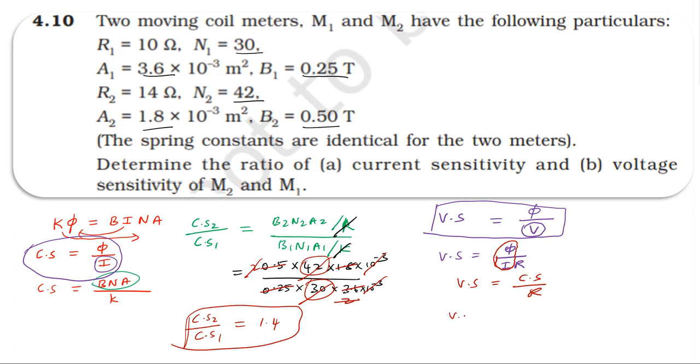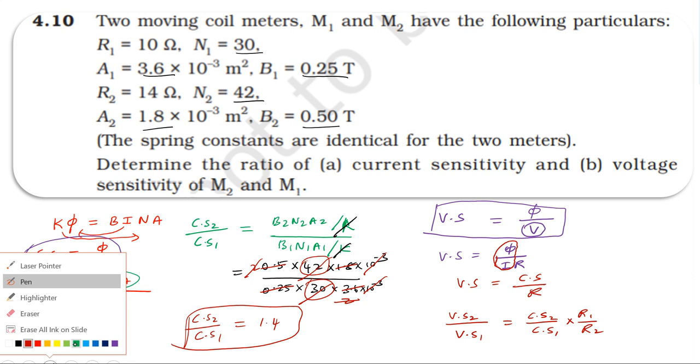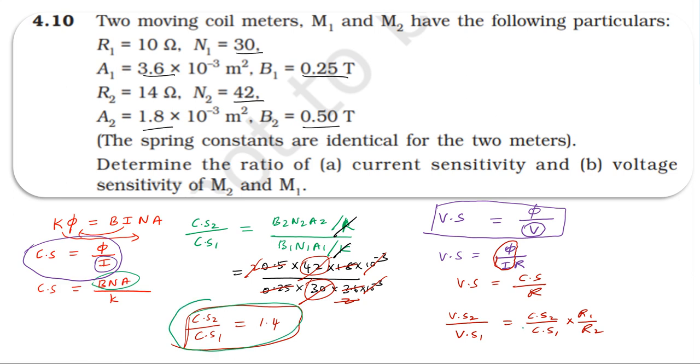Voltage sensitivity of second coil by voltage sensitivity of first coil equals current sensitivity of second coil by current sensitivity of first coil, multiplied by resistance of first coil divided by resistance of second coil.